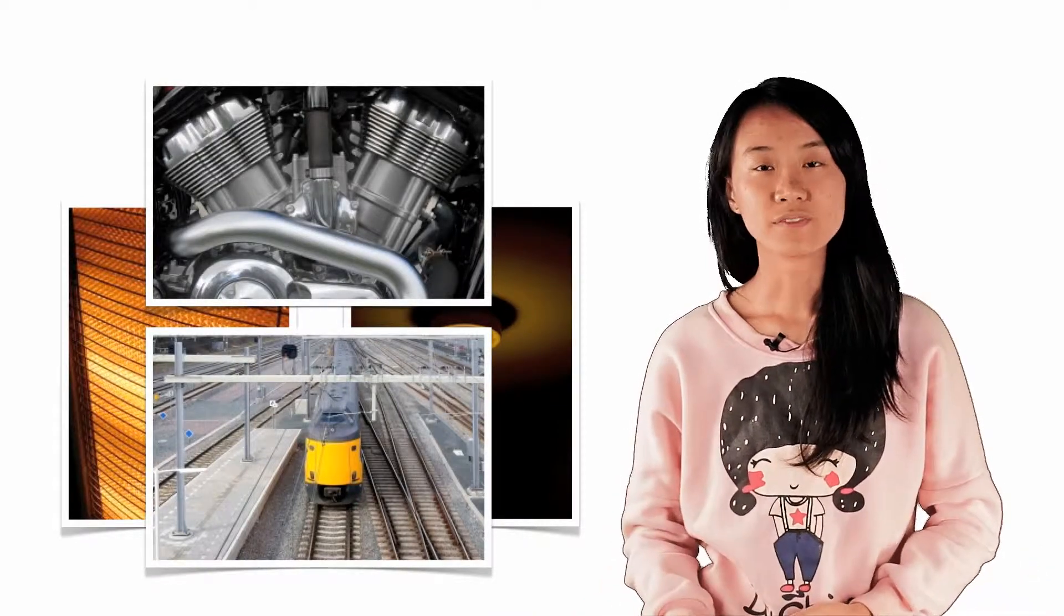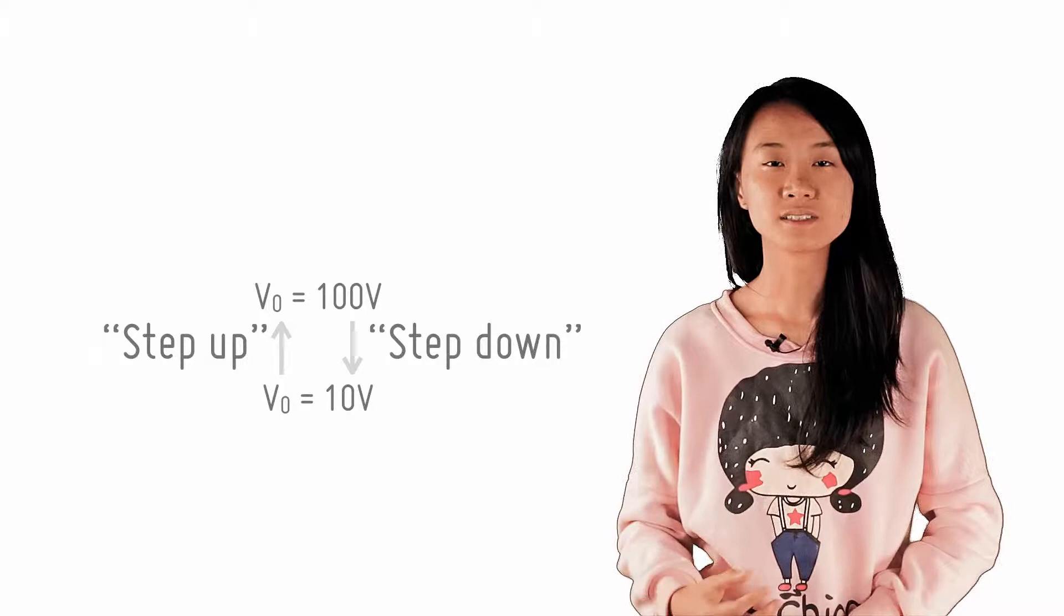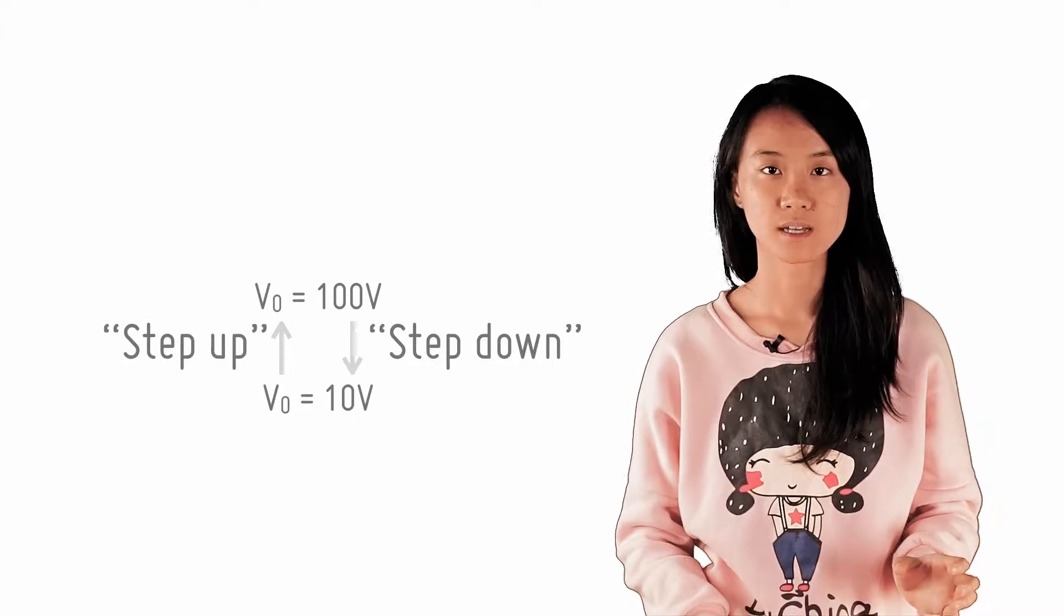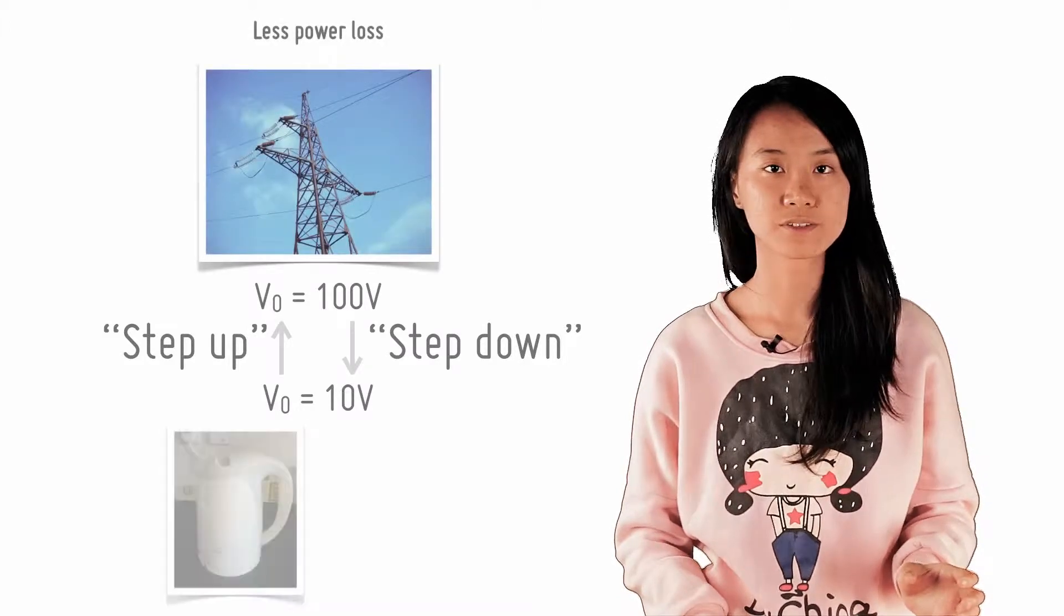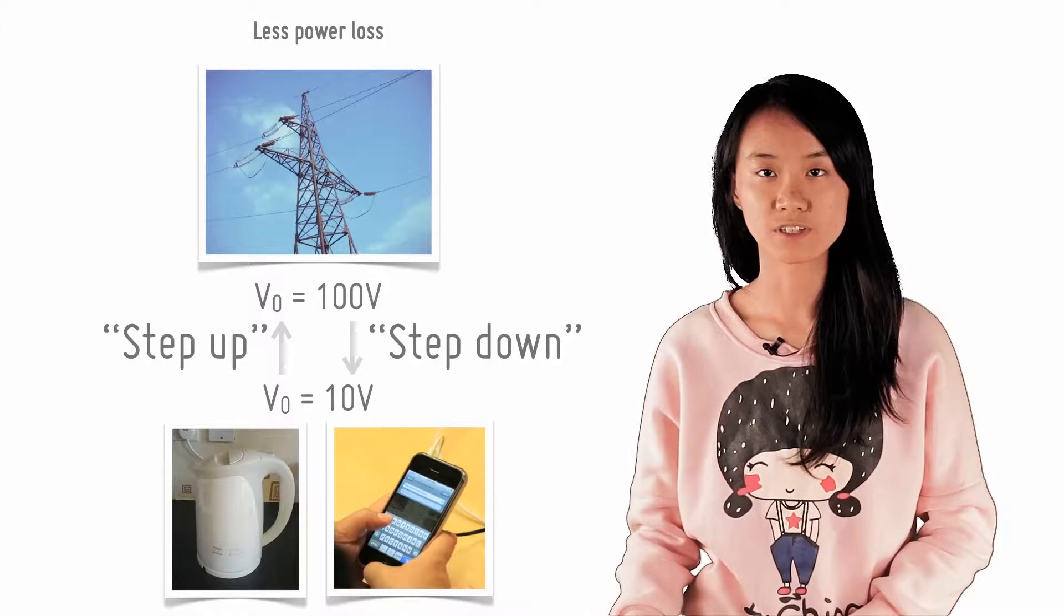While the main advantage of using AC over DC is that it can be stepped up or down a lot more easily. This is useful for practical purposes because high voltage transmission of electric power loses less power in the cable through joule heating, while low voltages are needed for our daily electrical appliances.